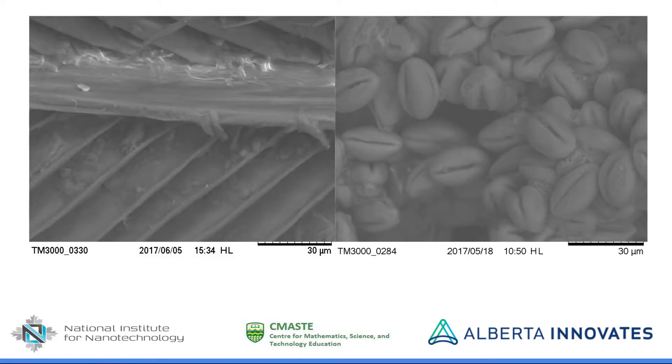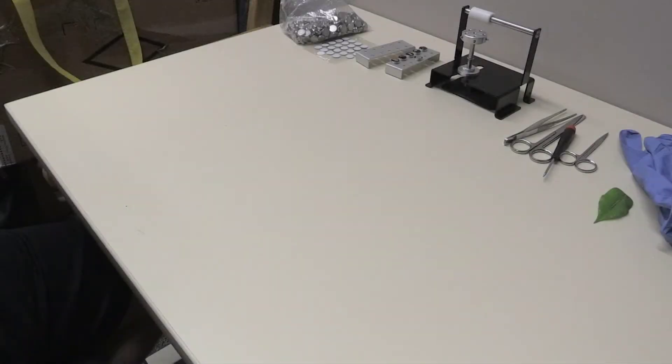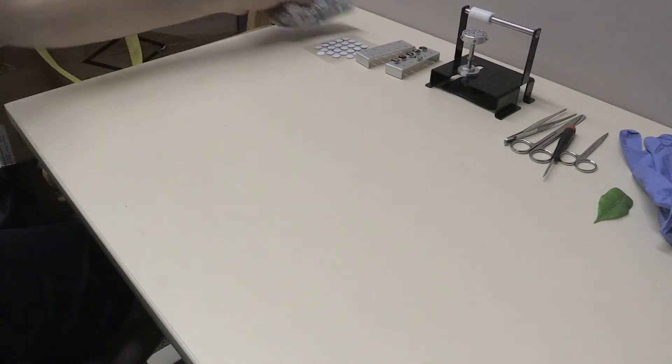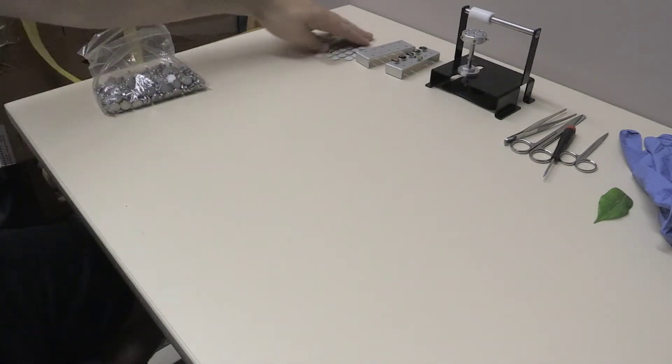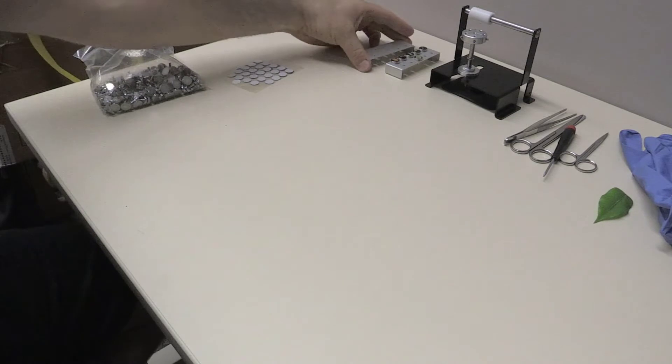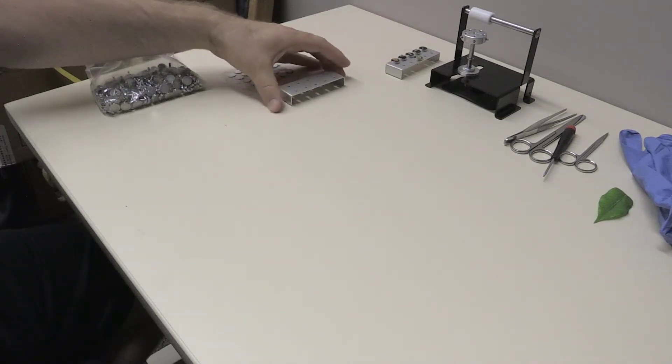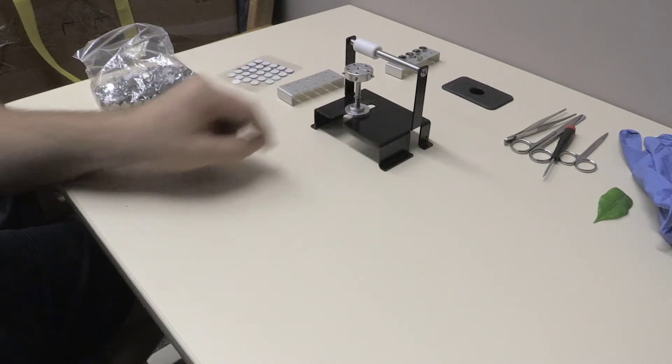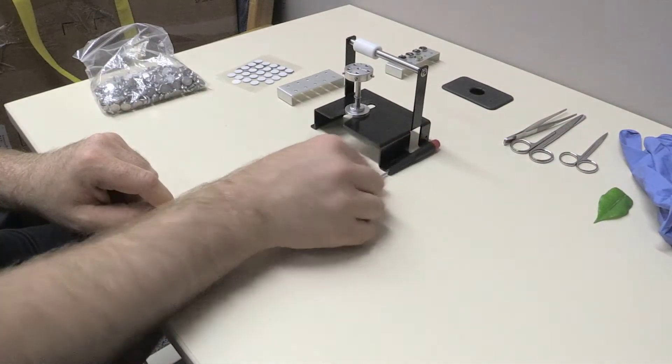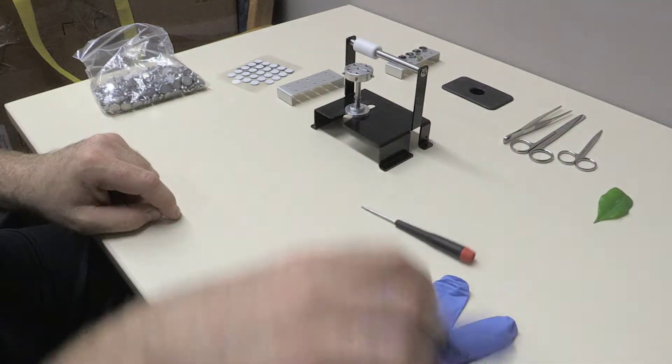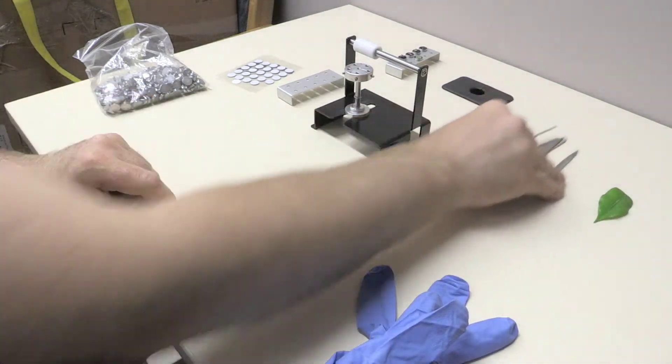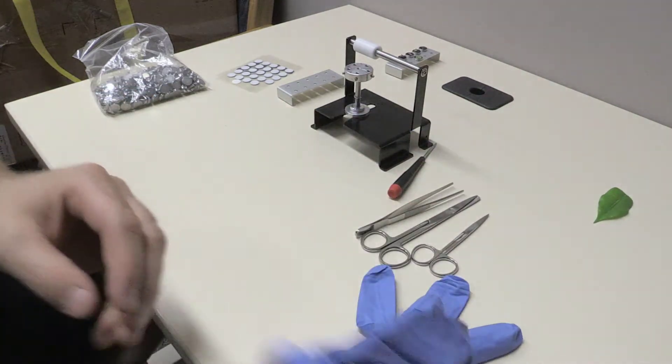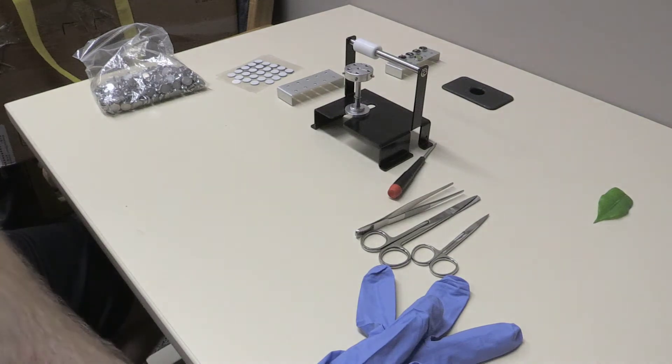To begin, ensure you have the proper supplies for preparing a specimen ready. You will need aluminum mounting pins, carbon stickers, a mounting pin holder, the SEM calibration device, the specimen stub and its associated screwdriver, latex or nitrile gloves, and any tools you may need to help prepare your specimen. This may include scissors, a scalpel, or tweezers.